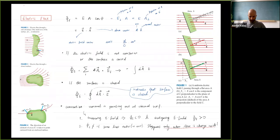The unit of flux: electric field is Newtons per Coulomb, area is meters squared, so flux is, not surprisingly, Newton meters squared per Coulomb.